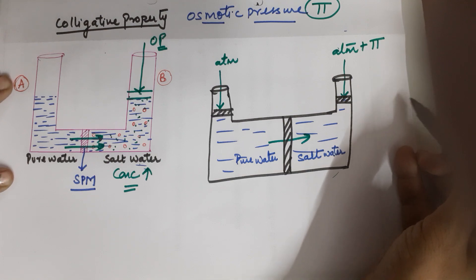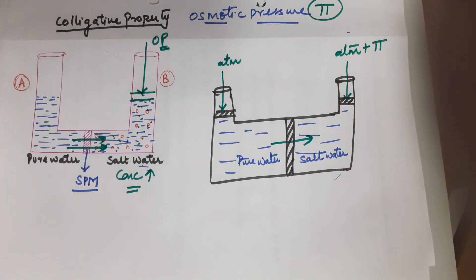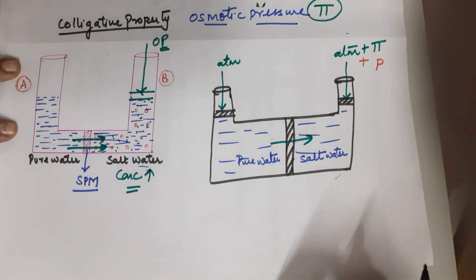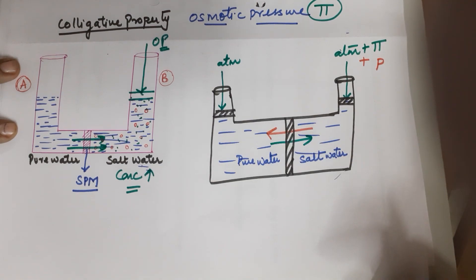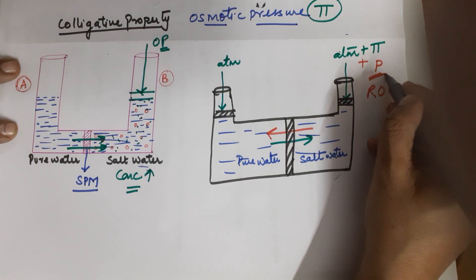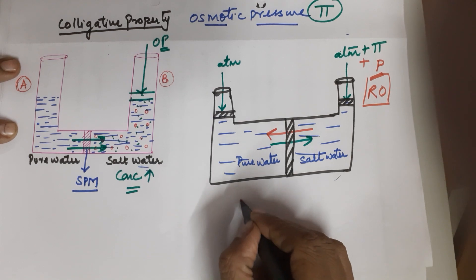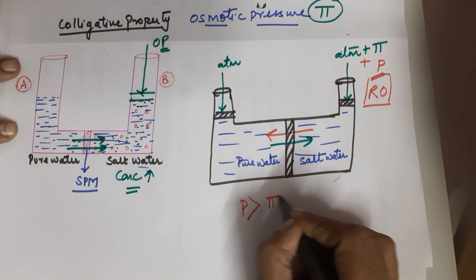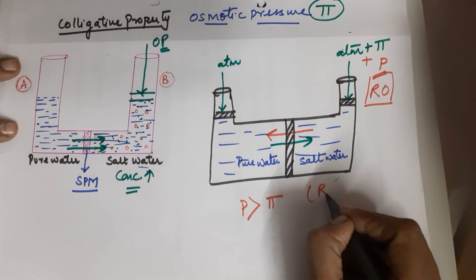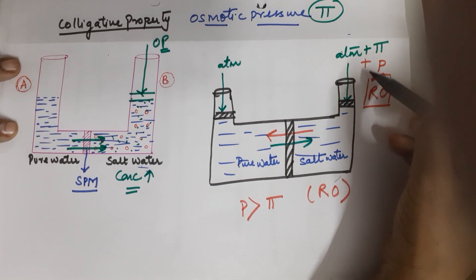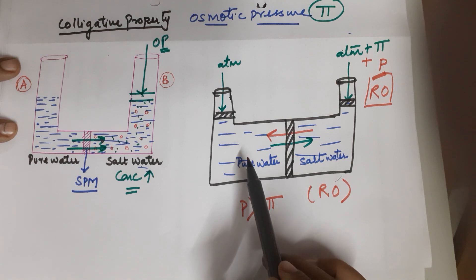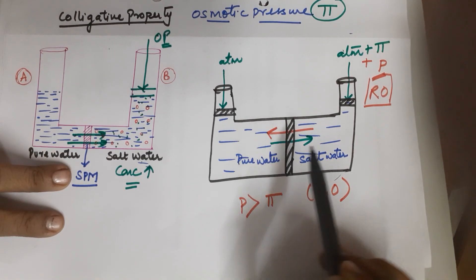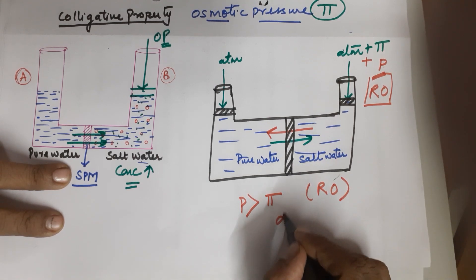What happens if you apply more pressure than osmotic pressure? Instead of just stopping the water flow, you are now pushing water to move in the reverse direction — that leads to reverse osmosis. So if the applied pressure on the solution side is greater than the osmotic pressure, this leads to reverse osmosis, and water molecules move from the salt water to the pure water.